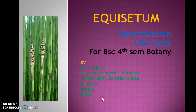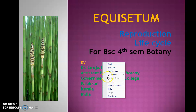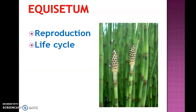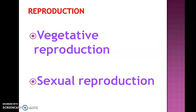Welcome back. In this video, we are discussing the reproduction and life cycle of Equisetum. The plant body of Equisetum is a sporophyte, which reproduces by two means: vegetative reproduction and sexual reproduction.